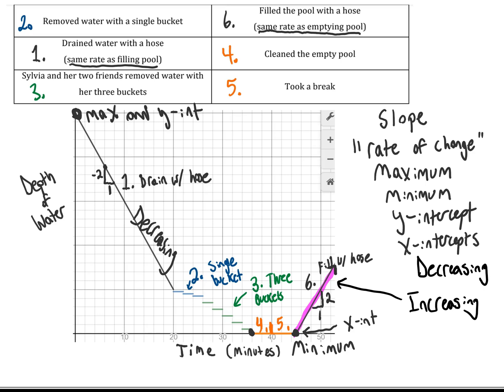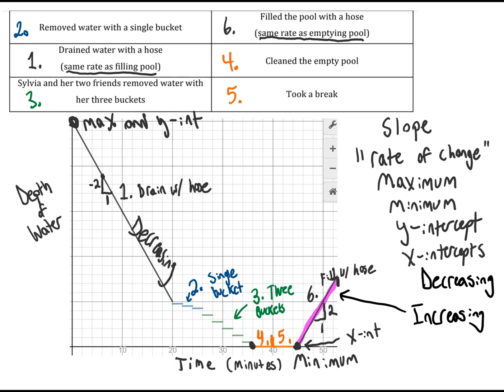And so those are some of the types of things that we're going to look at throughout this module as we analyze functions and their features. Slope, rate of change, maximum, minimum, y-intercept, x-intercepts, intervals of decreasing, and intervals of increasing. And the purpose of this task was just to introduce you to those terms in a context to make it easier to connect back to to understand as we move forward. And I almost forgot to mention we'll continue to talk about the terms continuous, such as steps 1 and 6 were continuous in this case. And we'll also continue to talk about discrete. So in my graph, the discrete portions of the graph were steps 2 and 3.